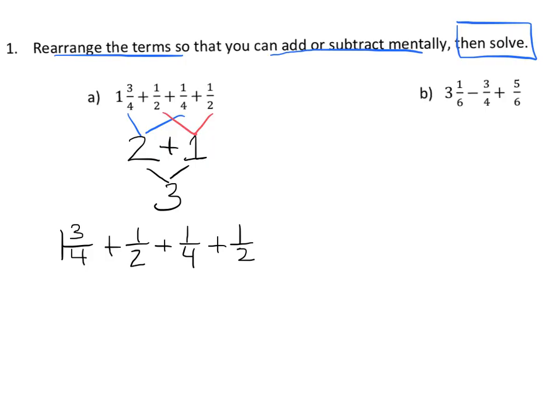What we're going to do is we're going to use the commutative property to move the quarters next to each other and to move the halves next to each other. And then we're going to use the associative property to add these together.